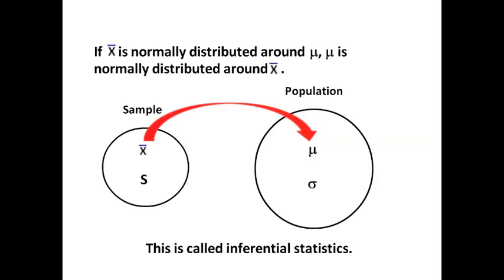If x-bar is normally distributed around mu, if you know mu, you can figure a confidence interval for x-bar. Doesn't it make sense that if you know x-bar, you can calculate a confidence interval for mu?